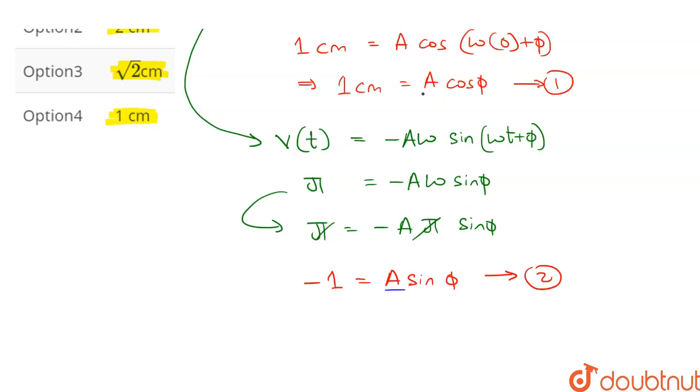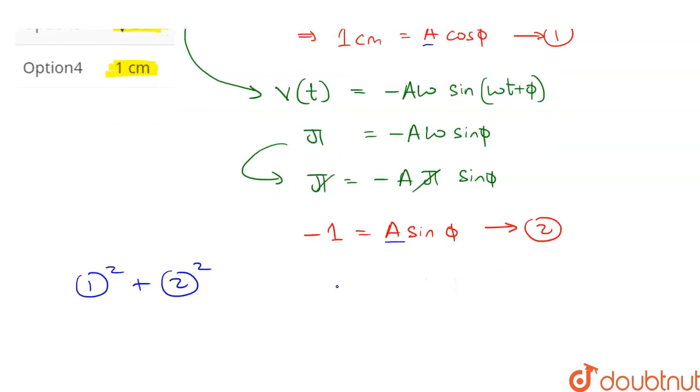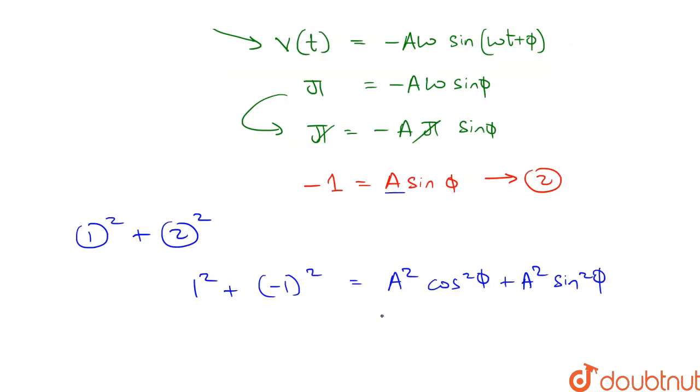To find the value of A, we need to find the sum of squares of these equations. Therefore, we will have 1² + (-1)² = A² cos² φ + A² sin² φ. Therefore, we have A² on the right hand side and 2 on the left hand side.